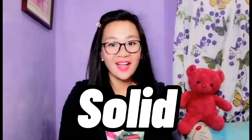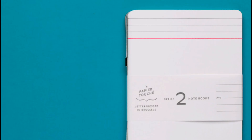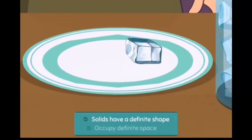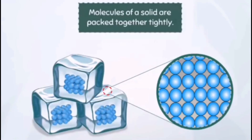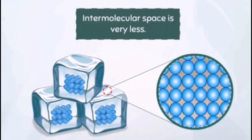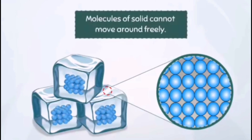The first state of matter is solid. A solid takes up a certain amount of space and has a recognizable shape. Most of the things you see are solids. Solids have a definite shape and occupy a definite space. The molecules of a solid substance are packed together very tightly, meaning the intermolecular space between the molecules is very small. As the space around each molecule is very small, molecules of a solid cannot move around freely.